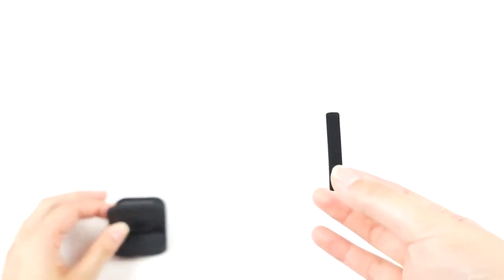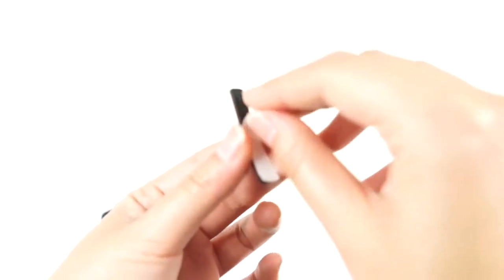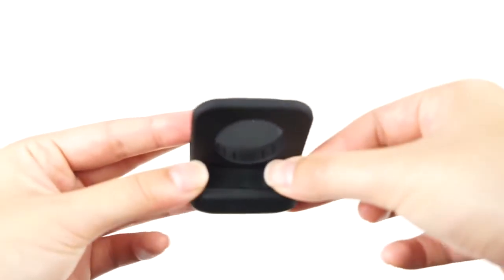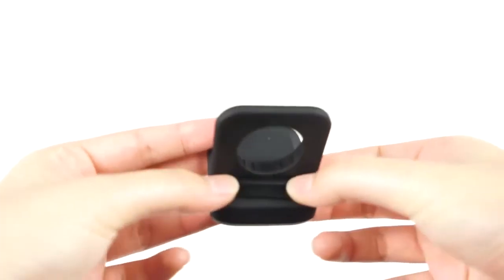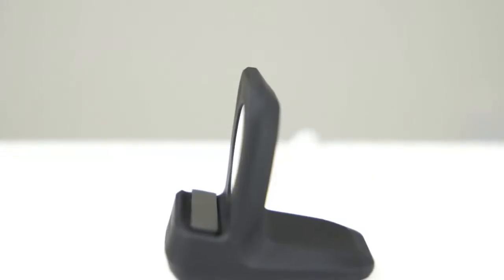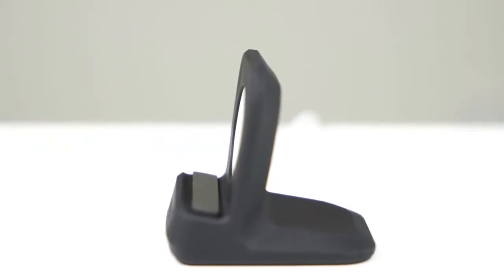For the 38 millimeter Apple Watch, you can adjust the size of the stand by using the included silicone pad. It sticks onto the bottom cradle, blending right in. If you've got a 42 millimeter watch, no need to bother with this.